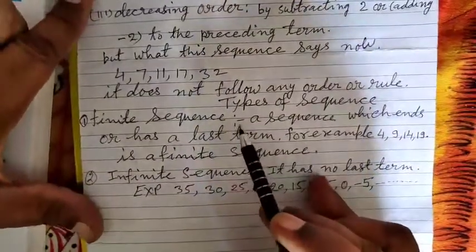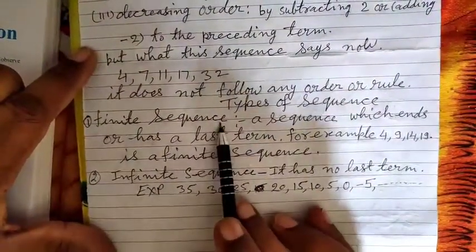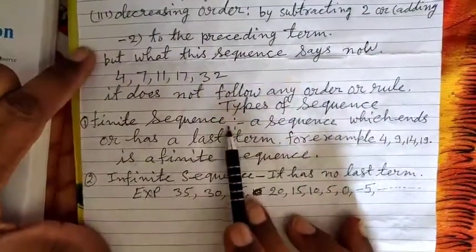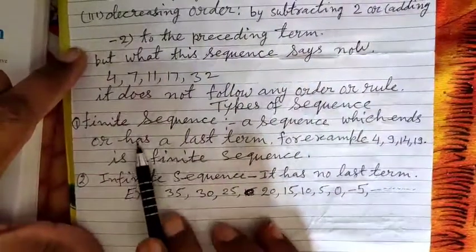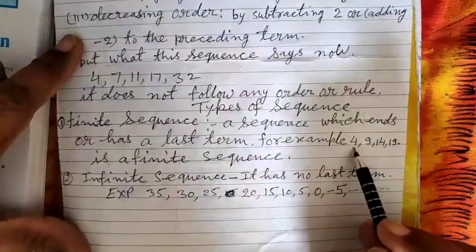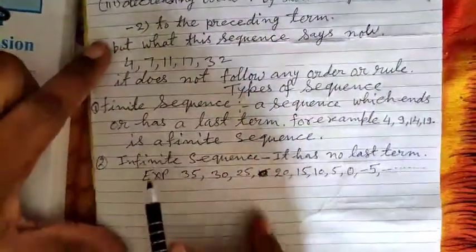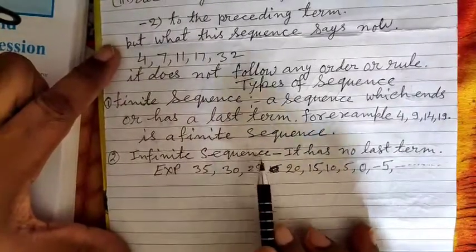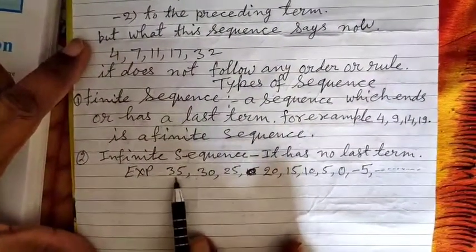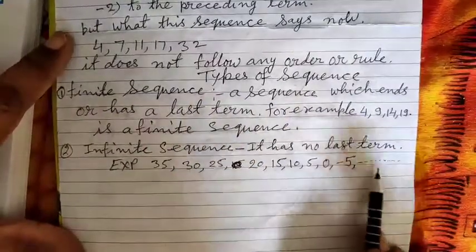Now we will explain the types of sequences. The first type is a finite sequence — a sequence which has a last term. For example, 4, 9, 14, 19 — here 19 is the last term, so it is a finite sequence. The second type is an infinite sequence — it has no last term. For example: 35, 30, 25, 20, 15, 10, 5, 0, minus 5, and so on — it has no last term, so it is called an infinite sequence.